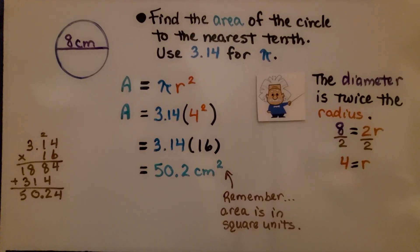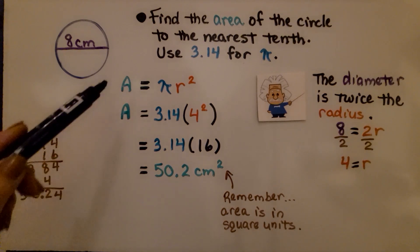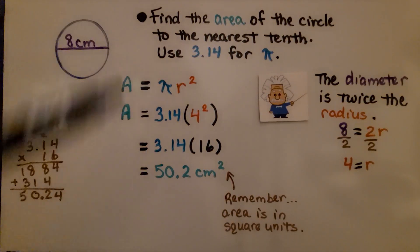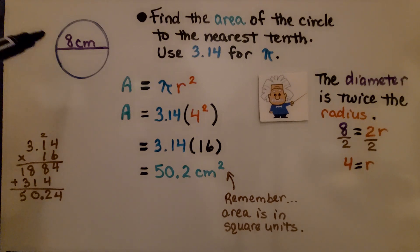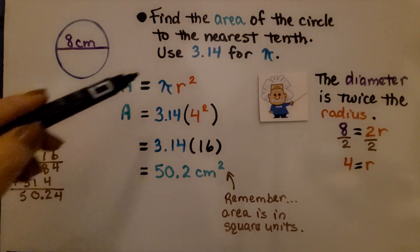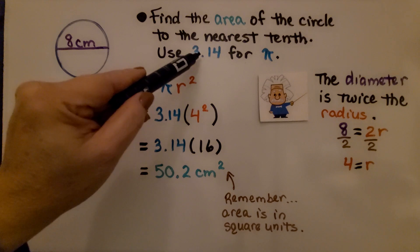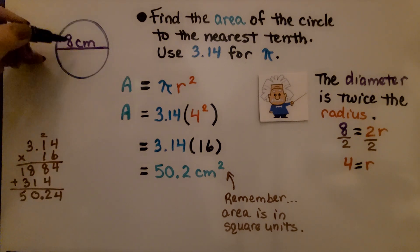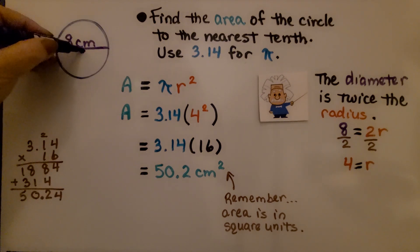So now we know the formula for the area of a circle is a equals pi r squared. We can find the area of the circle to the nearest tenth and we'll use 3.14 for pi. So it's showing us a circle with an eight centimeter diameter. Well, we know the diameter is twice the radius.